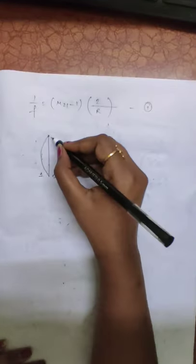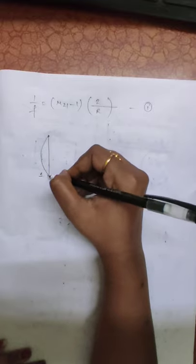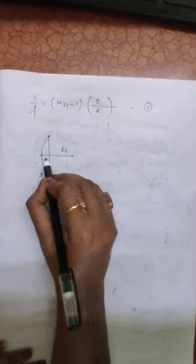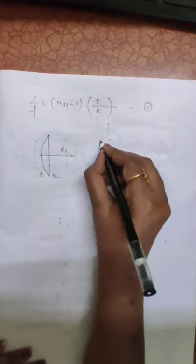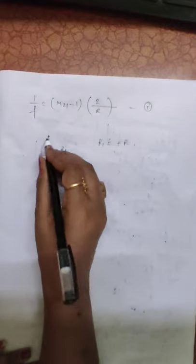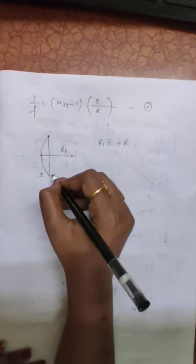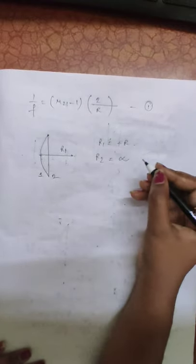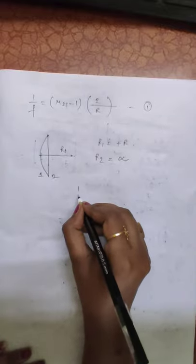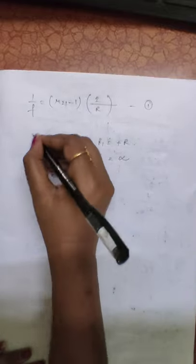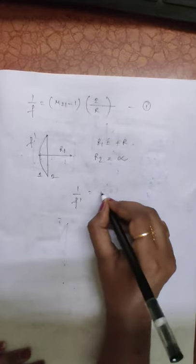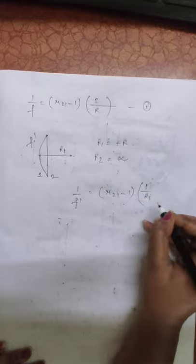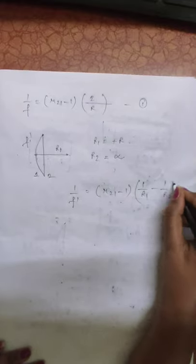For the planoconvex lens, this is our first surface and this is our second surface. The radius of curvature of the first surface is R1, which is along the incident ray, so R1 = +r. For the second surface, it is a plane surface, so its radius of curvature is infinite. Suppose its focal length is f dash, so 1/f dash = (μ₂₁ - 1)(1/R1 - 1/R2).